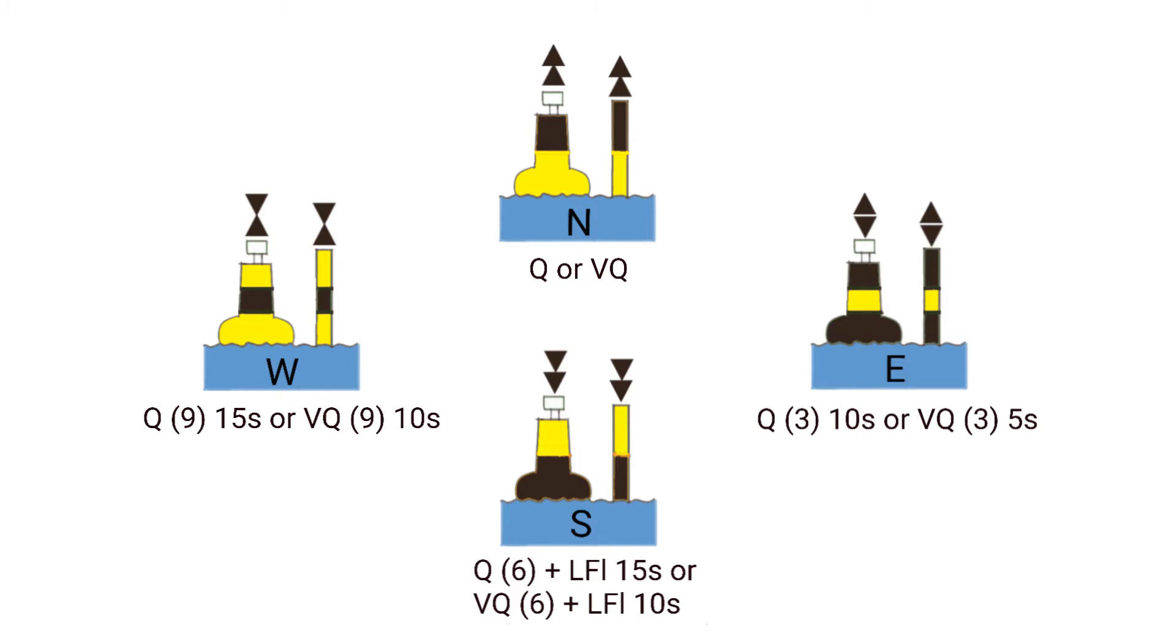The east cardinal, at three o'clock, is three quick flashes every ten seconds, or three very quick flashes every five seconds. The south cardinal boy has groups of six flashes, followed by a long flash. The long flash just makes it easier to distinguish from the nine flashes of the west cardinal boy. So you don't have to carefully count the flashes to distinguish between south and west cardinal boys.